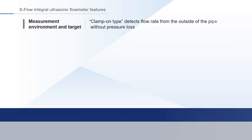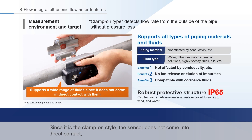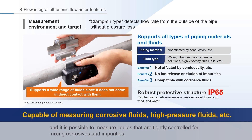Since it is a clamp-on style, the sensor does not come into direct contact with the fluid, making it possible to measure liquids that are tightly controlled for mixing of corrosives and impurities. It can also measure high-pressure fluids that cannot use inline piping due to safety concerns.